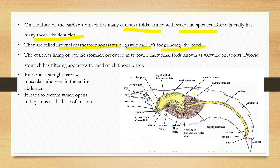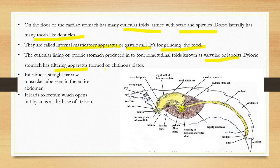The cuticular lining of the pyloric stomach is produced into four longitudinal folds known as the valvule or filter plate, also called the pyloric filter plate. It acts as a filtering apparatus and is formed of chitinous plates. The intestine is a straight narrow tube in the anterior abdomen leading to the rectum and opening at the anus.